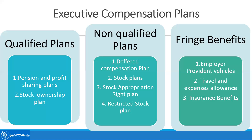The third type is fringe benefits plans, which are also divided into three. The first is employer-provided vehicles. A vehicle used 100% for business purposes has no tax consequences or reporting requirements. However, employees will be taxed on personal use of the vehicle, which must be used for ordinary and necessary business purposes.